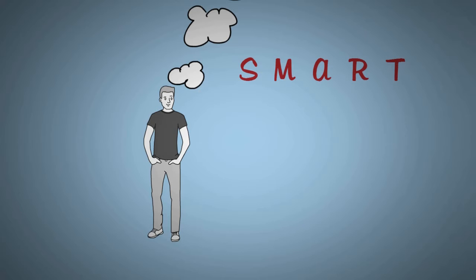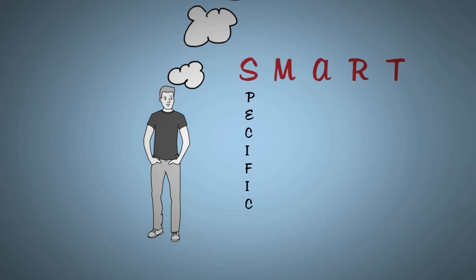S stands for specific. Know exactly what you want and why you want it. The why here is important. Do you want to lose your belly fat because you want to be a faster runner, or because you want to get laid? Okay, so getting laid is a goal.